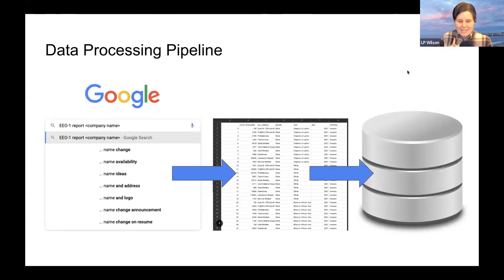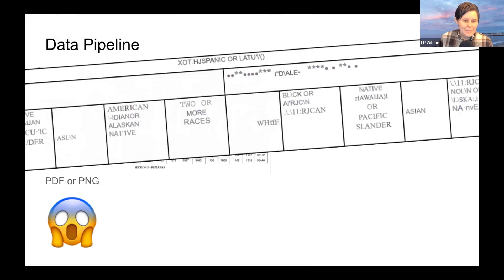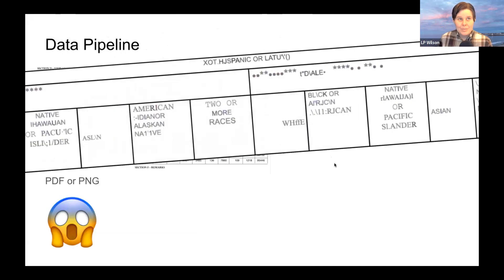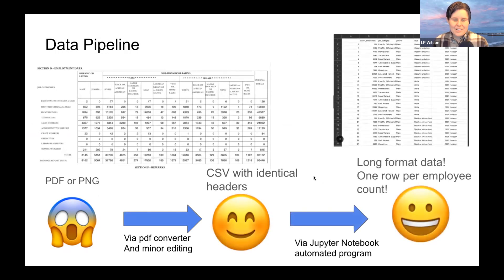No problem though — we persevered. The backend team got those PNGs and PDFs into long-format data with one row per entry and loaded it into our database. This process involved some manual work: we used a PDF-to-Excel converter, and the PNGs especially needed extra attention on the headers — the numbers came out okay, but the headers not so great. After that, we got everything into CSVs with identical headers, and then a Jupyter notebook automated converting the two-dimensional table into the long format we needed.